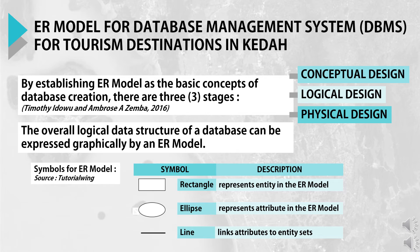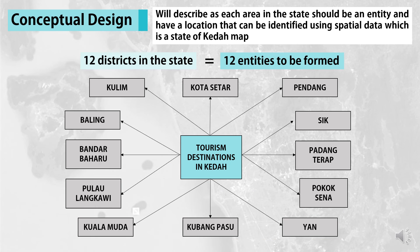Now, let's start on how ER model for DBMS can be used for tourism in Kedah by going through three stages. First, we need to structure the ER model and express it in graphic form. We use symbols to represent entity and attribute. For entity, we use a rectangle. For attribute, we use an ellipse. And for lines, we use them to show the links or connections between attributes and entity sets.